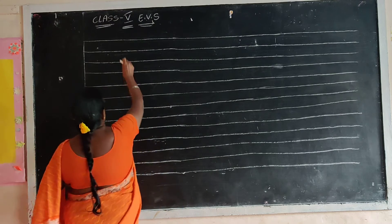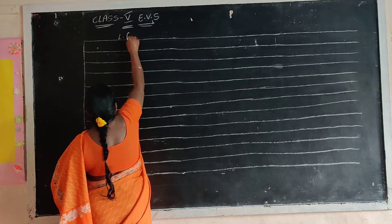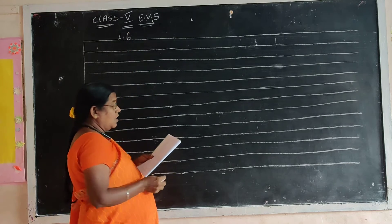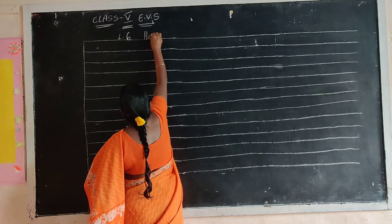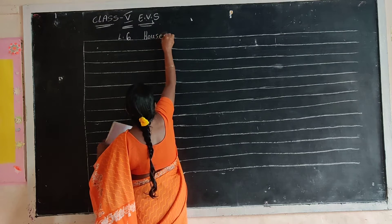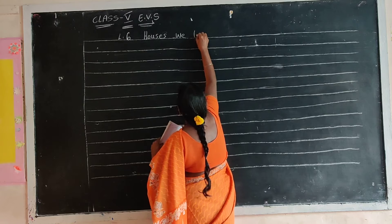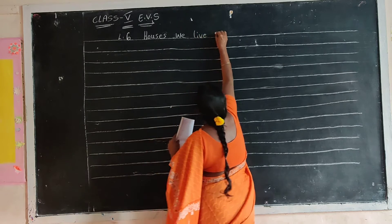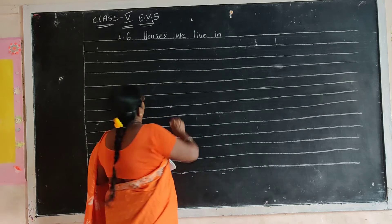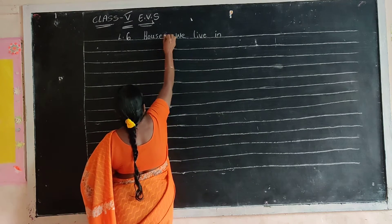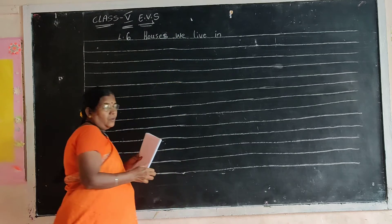The lesson I take is Lesson 6. Houses — we live in. Lesson 6 is 'Houses we live in.' Okay?